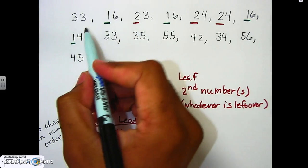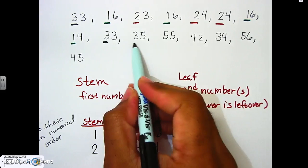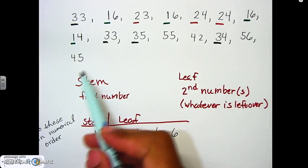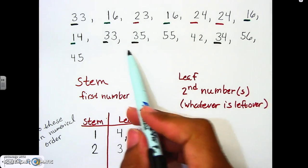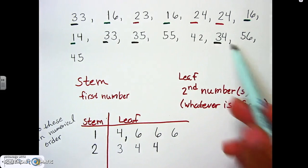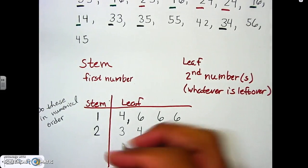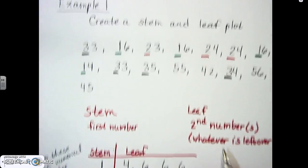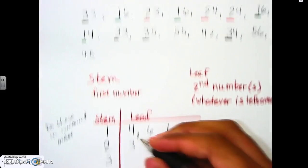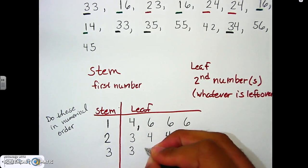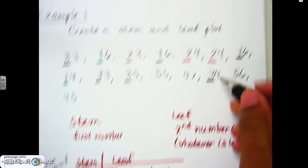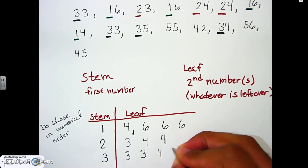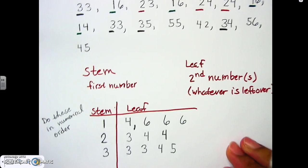Next we go to the threes — that's the next number in numerical order. We have numbers with stem 3: they are 33, 35, and 34. So we place the stem as 3, then the leaves in numerical order: 3, 4, 5. We have to stay in numerical order the whole time.